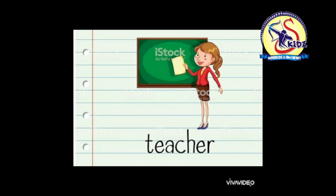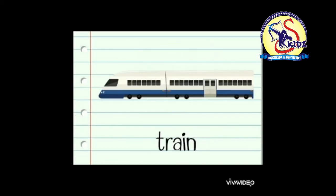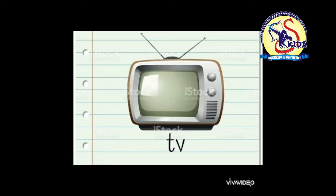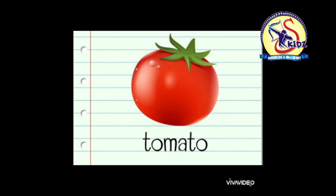See the next picture — it is a triangle. Triangle, repeat: triangle. The next picture — she is a teacher. Teacher, repeat: teacher. The next picture is of a train. Train, repeat: train. It is a train. The next picture is of a TV. TV, repeat: TV. It is a TV.